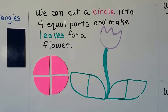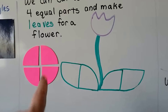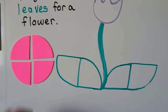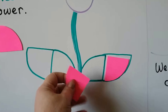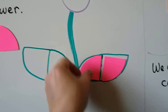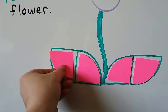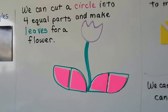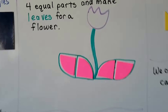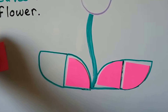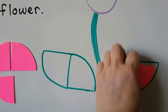We can cut a circle into four equal parts and make leaves for a flower. We put this one here, and this one here, and this one here, and this one here — and we can see that they made the shapes of leaves for a flower. That's from taking a circle and cutting it into four equal parts to make that new shape.